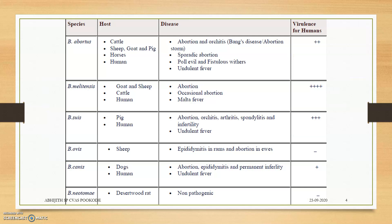There are various Brucella species affecting different host types. Brucella neotomae is considered non-pathogenic, but there are some changes — it is now pathogenic in desert wood rats. There are ongoing studies, so we cannot completely say it is non-pathogenic or pathogenic. In females, it produces abortion; in males, orchitis, epididymitis, and infertility.